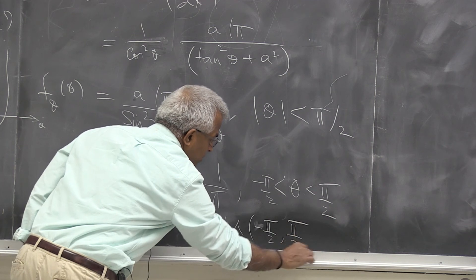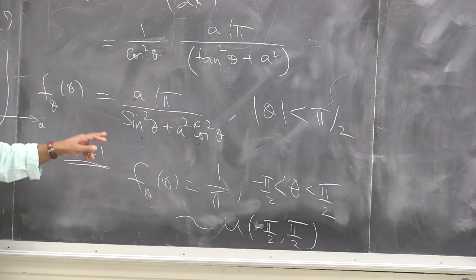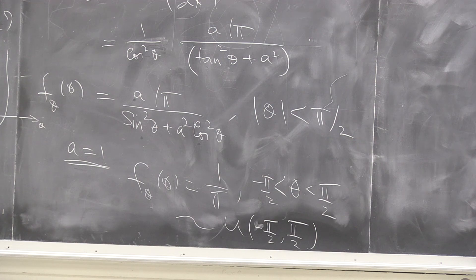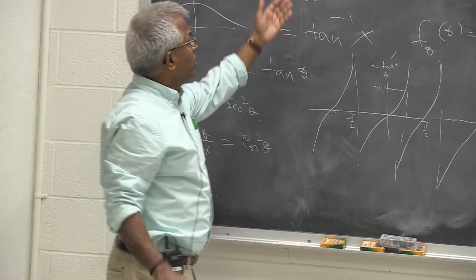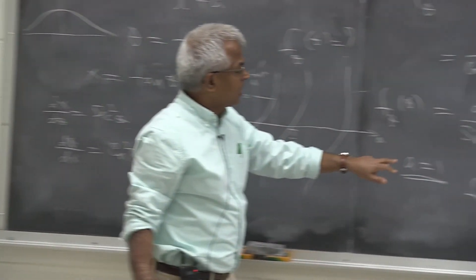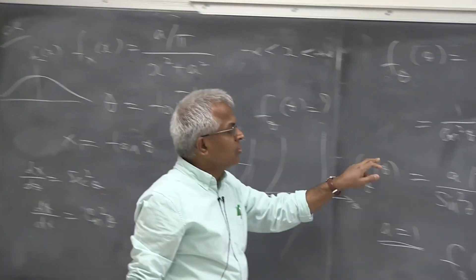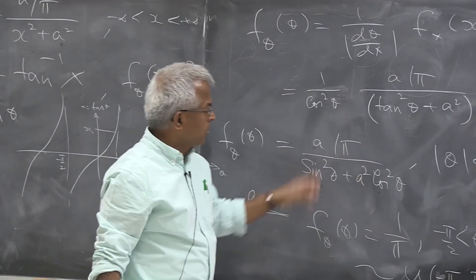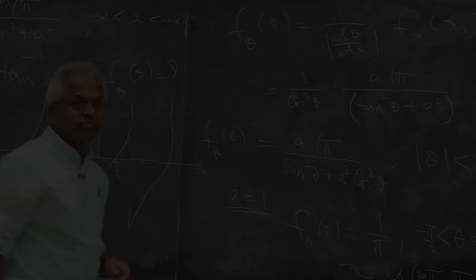So the standard result is, if x is Cauchy, then tan inverse x, which is theta, is uniform. The only thing I want to emphasize is, this is only for the special case when a equal to 1. If the Cauchy parameter is anything other than a, the density function is going to be messy and it will involve theta. Yep. We'll see you later.